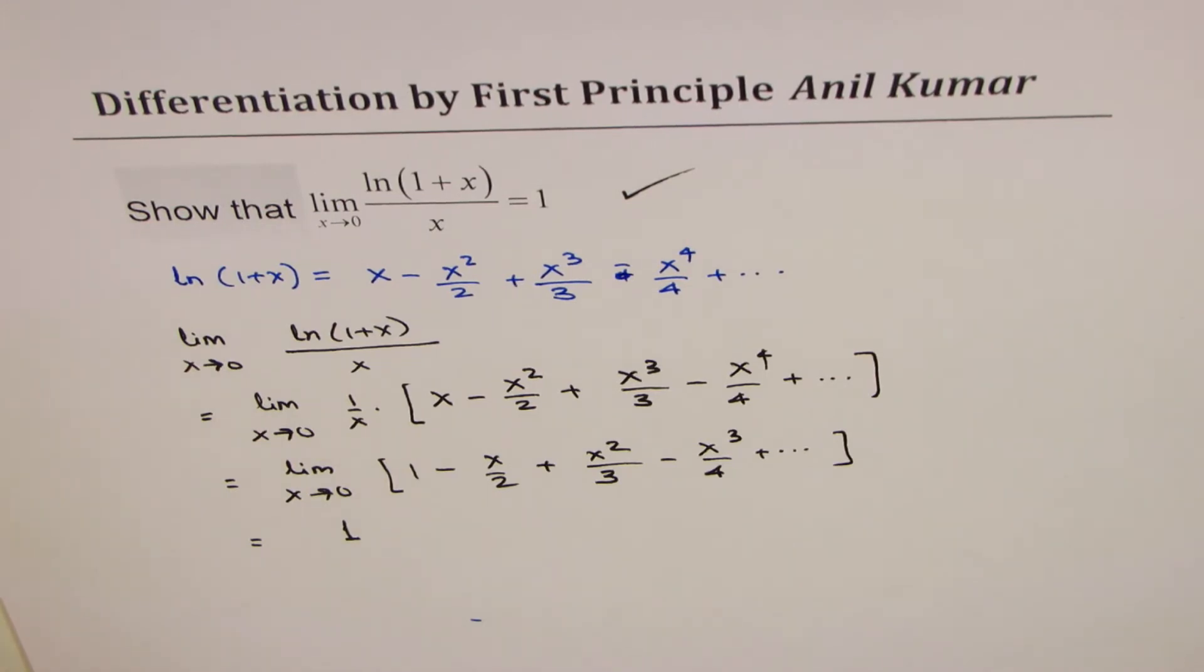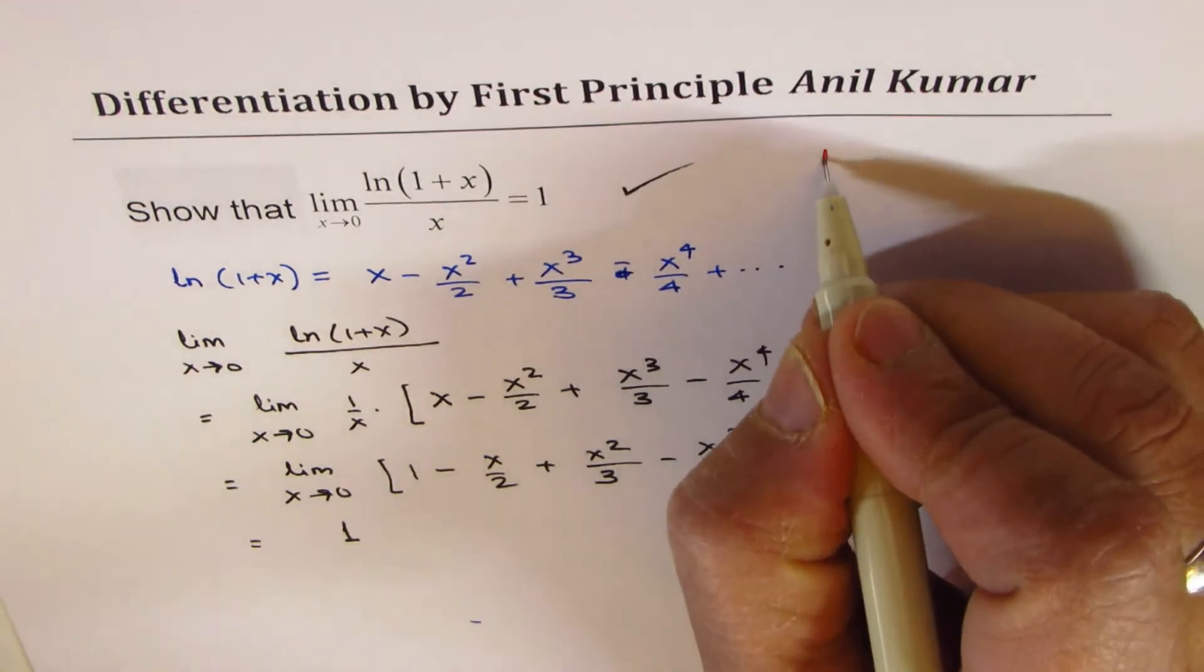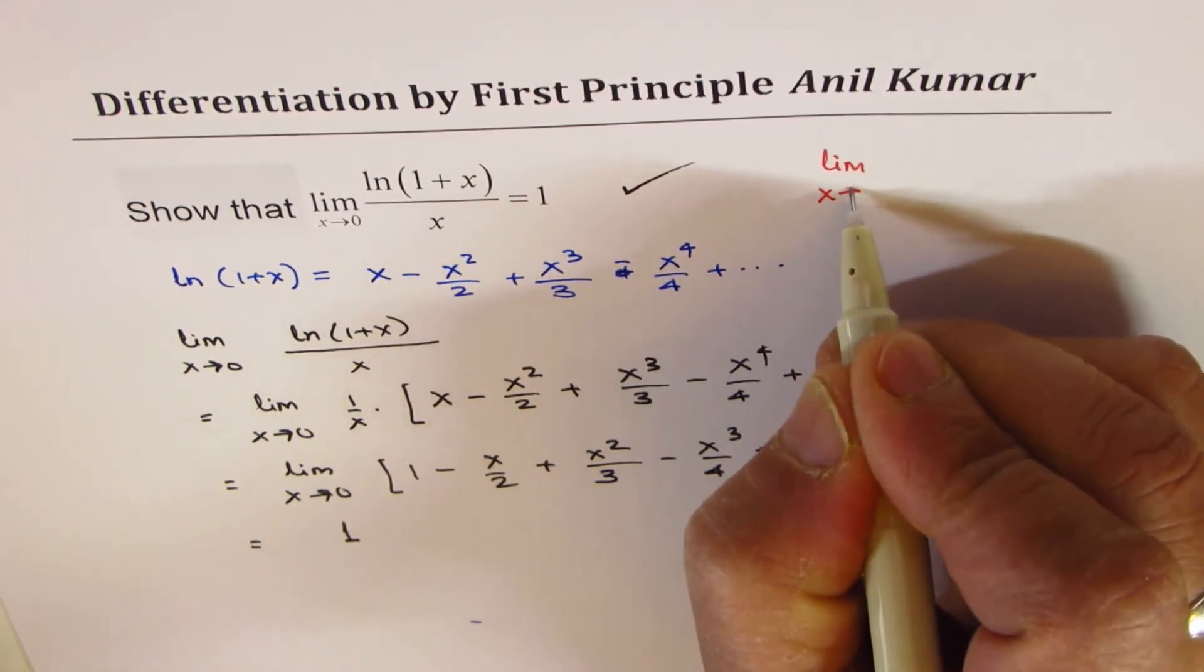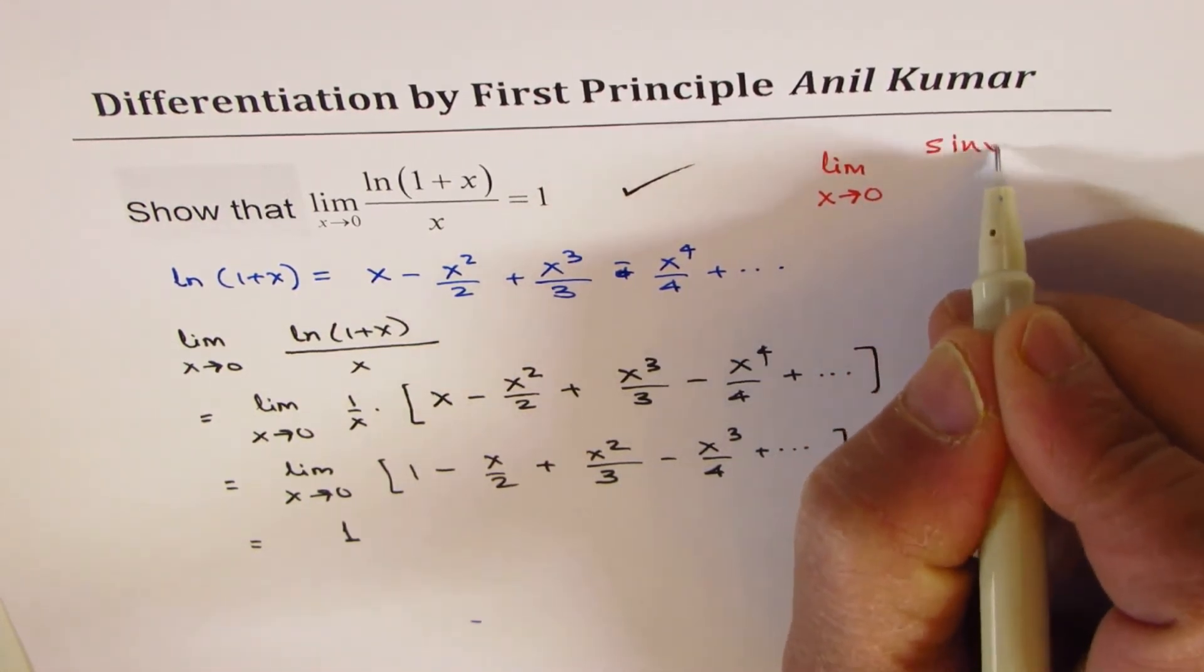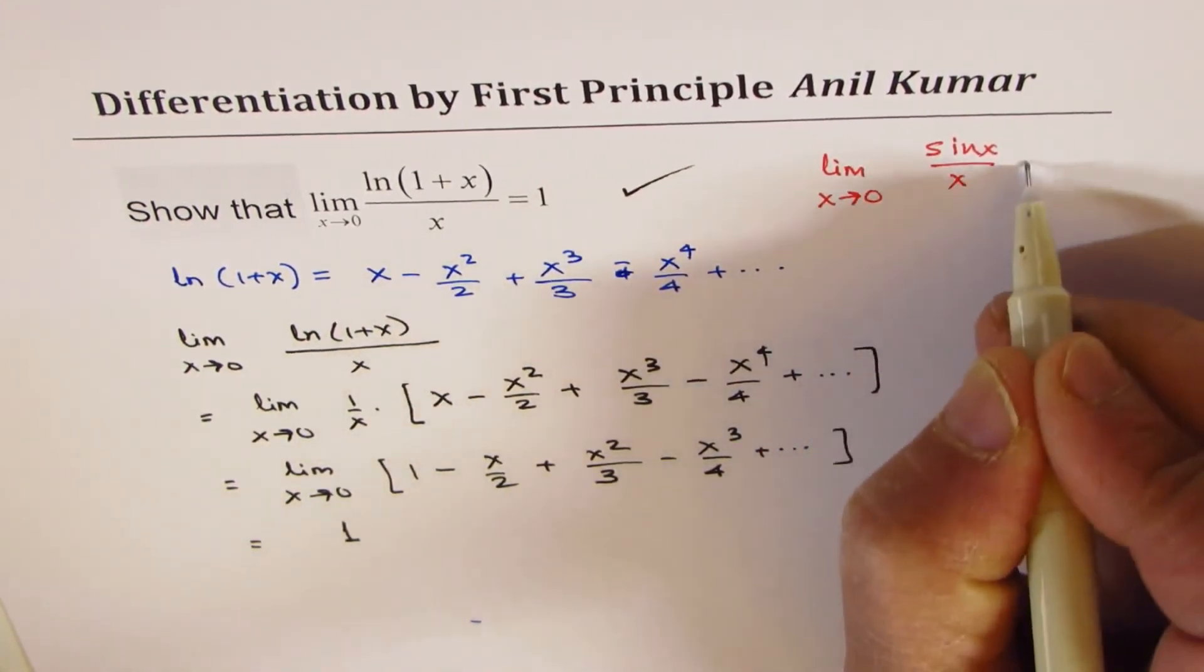Now it is as important as the limit for sin x over x. So whenever you find trigonometric functions, you say limit sin x over x when x approaches 0 is 1.